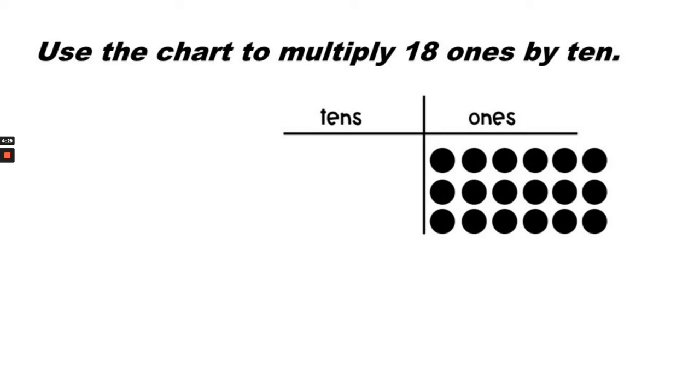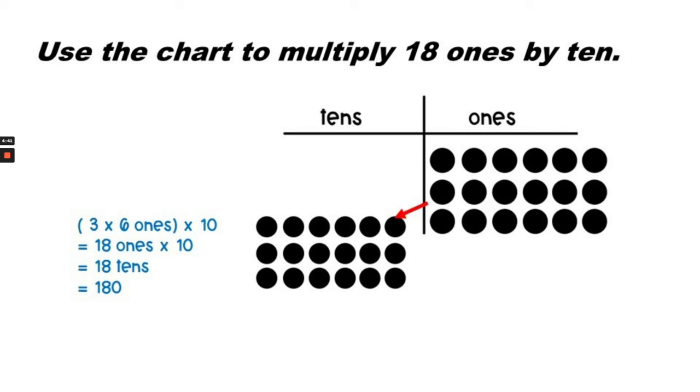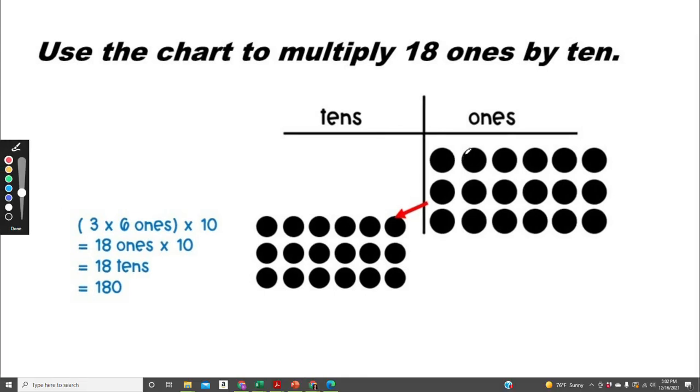Use the chart to multiply 18 ones by 10. We could say that there are 3 times 6 ones times 10. So we would move this entire block of 3 times 6 over to the tens place.